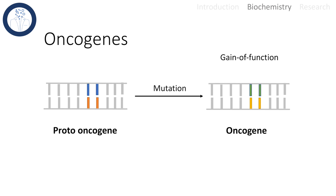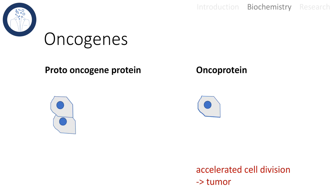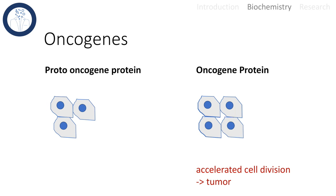Once again, we have the proto-oncogenes, and after a mutational event that somehow leads to a different amino acid sequence, which then results in a gain-of-function, the oncogene is active. This oncogene has an influence on the cell cycle as it drastically increases cell proliferation, which causes tumors.